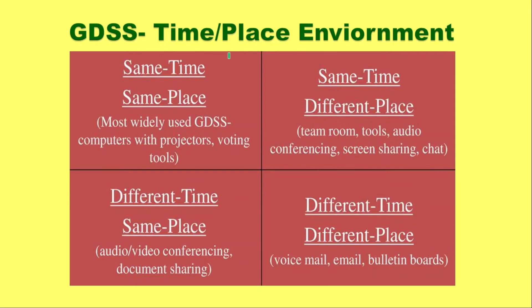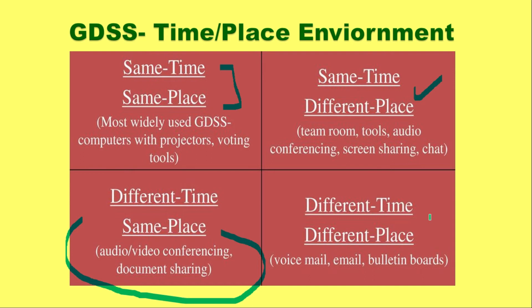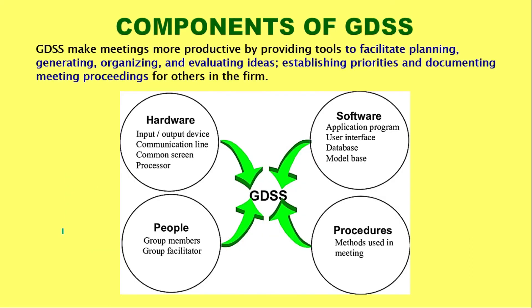There are four environments based on time and place where GDSS can be used. First, same time, same place — computers, projectors, or voting tools are used. Second, same time, different place — team room tools, audio conferencing, screen sharing, and chat. Third, different time, same place — video/audio conferencing where anyone can join or leave. Fourth, different time, different place — voicemail, email, and bulletin boards are used.